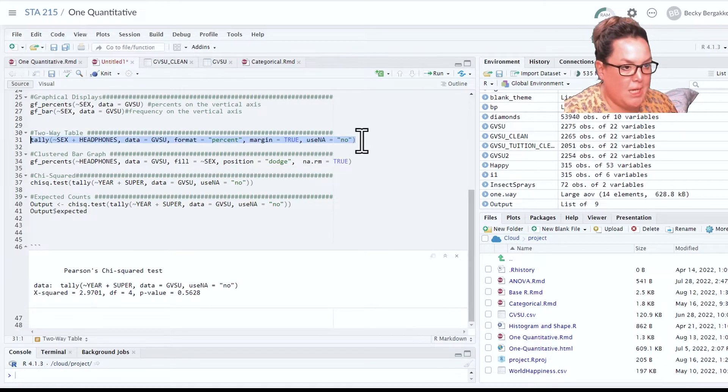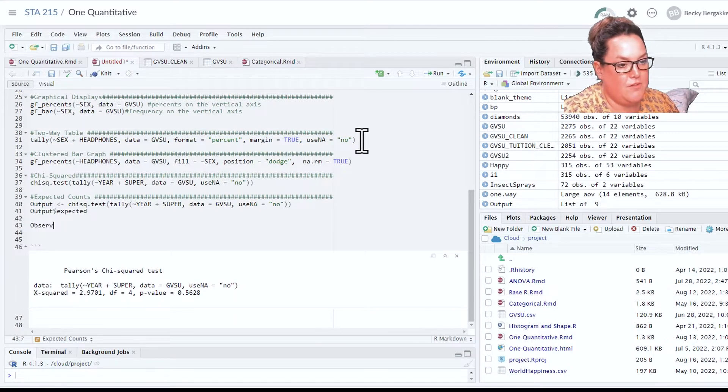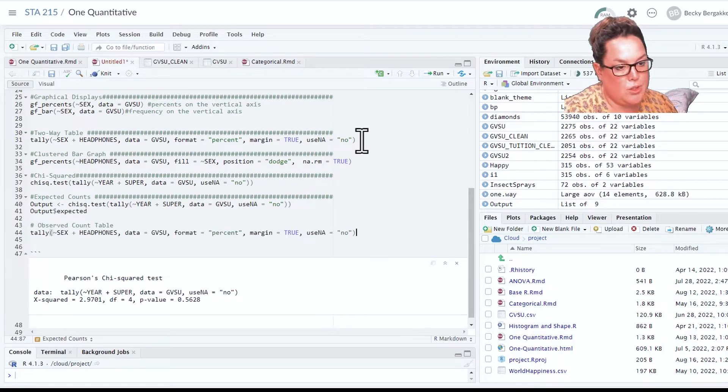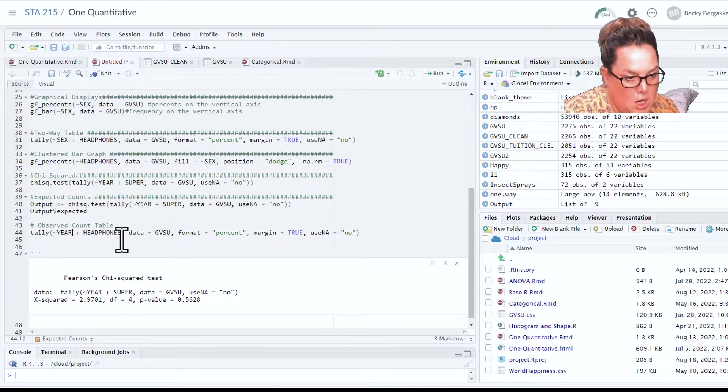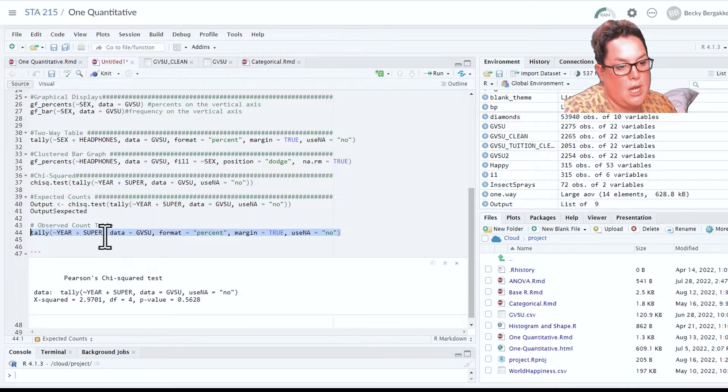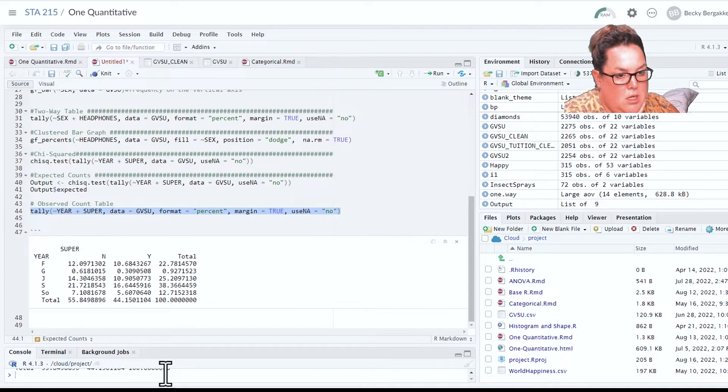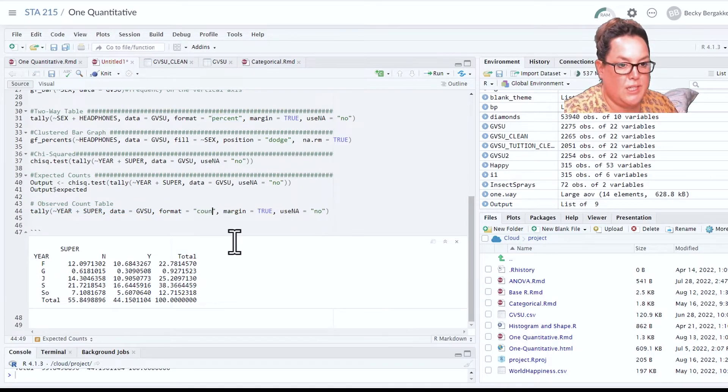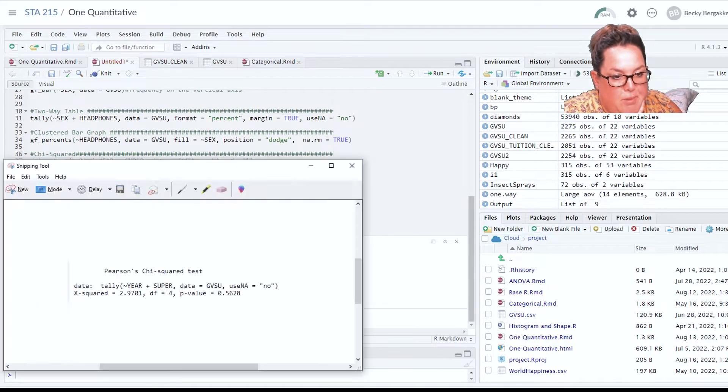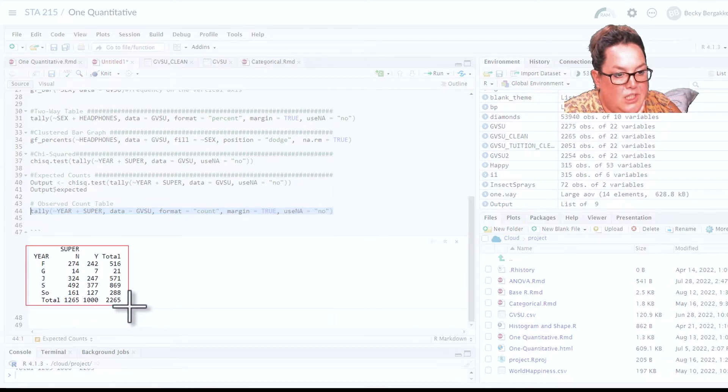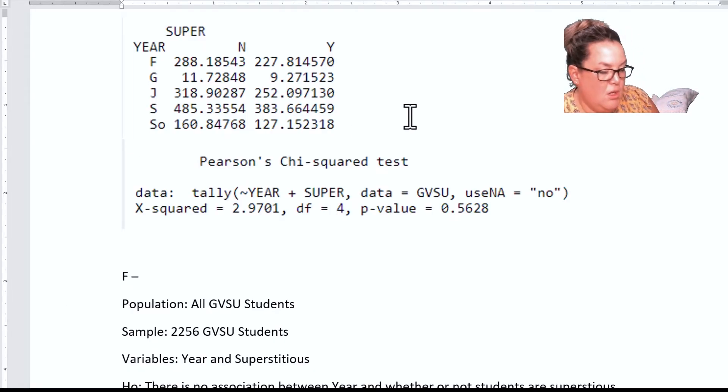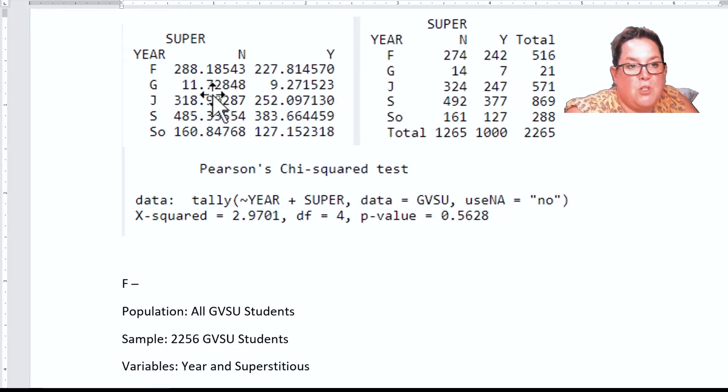If we were to compare side by side the superstition, let's just do that. What I'm going to do right now is I actually am going to make an additional observed count table. To do that I am going to do the tally and then I'm going to do year and then superstition. I don't want it as percent, I want it as count. I'm going to snip that, new snip, copy into my Word document, paste.